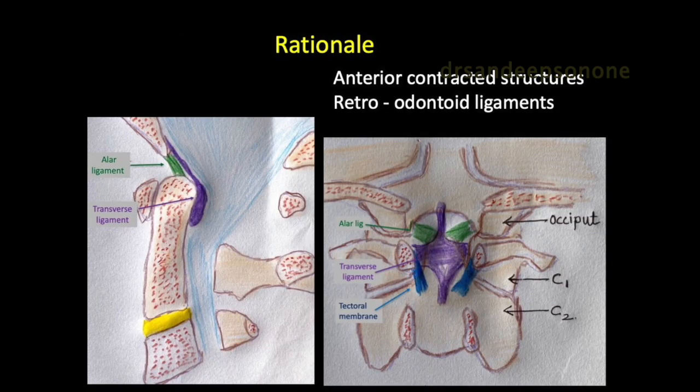In long-standing atlantoaxial dislocations, the structures on the anterior aspect of the C1-C2 joint complex — which is the concave side — are severely contracted. These could be muscles like the longus colli or the facet joint capsules, or dysplasia in the bone itself. The retroodontoid ligaments, that is the LR ligaments, the apical ligaments, and the transverse ligaments, are also severely contracted, which hinders the reduction of the C1-C2 joint complex.